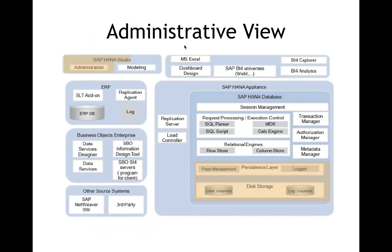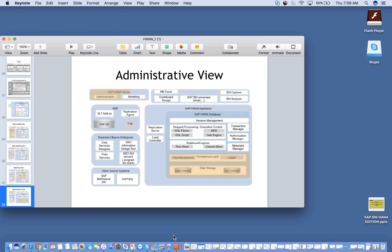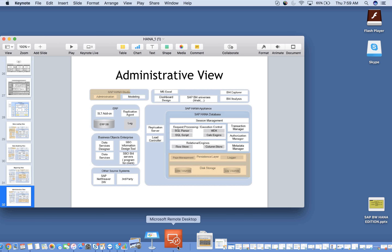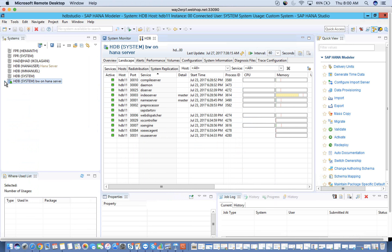In response to a question about ADSOs and composite providers: by default, the system creates a column store when you create a table. If there is a need for a row store, you would select and change it. When you create any new table, the system automatically creates it as a column store. Any BW objects used with HANA — including DSOs — will have only column store tables. The underlying database tables for BW are all column store by default.